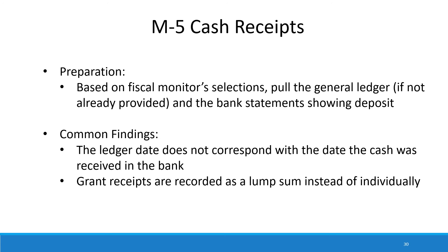Then we're going to do a simple test of cash receipts. We are going to select some items from our GRS program, and we just need to see where it was recorded in your general ledger and the date that it was deposited in your bank account. What we find there is that the ledger date doesn't correspond with the date the cash was received in the bank, and also that the grant receipts are recorded as a lump sum instead of individually.